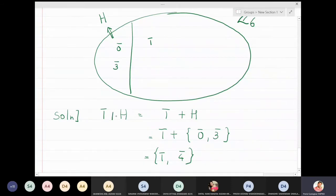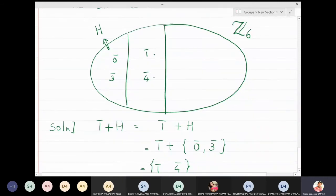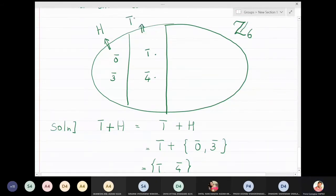These elements will go inside this set, and I'm going to label it as 1̄ + H. Now which element is missing out from Z₆? Z₆ has 1̄, 2̄, 3̄, 4̄, 5̄, and 0̄, so I see that 2̄ is missing.